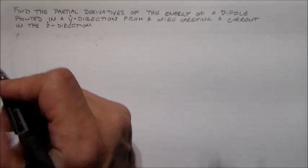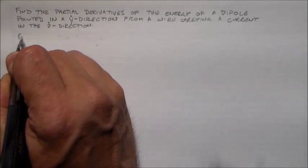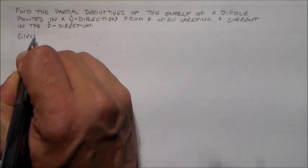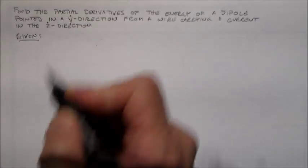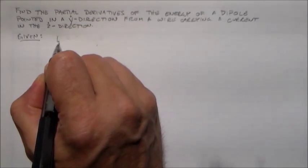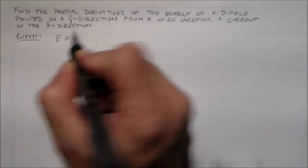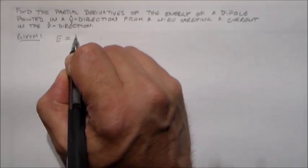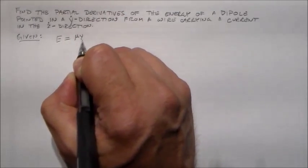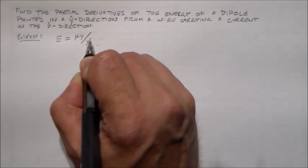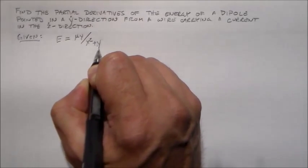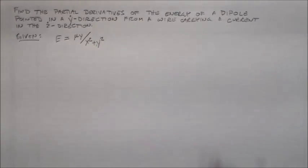So that wire is going to create a magnetic field that's going to have an effect on that dipole, and so that dipole is going to have a potential energy associated with it just because it has a force associated with it. And so the energy of that configuration is going to be the strength of the dipole multiplied by the y coordinate divided by the square of the x and the y coordinates.